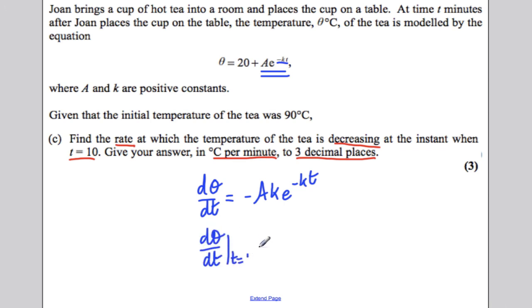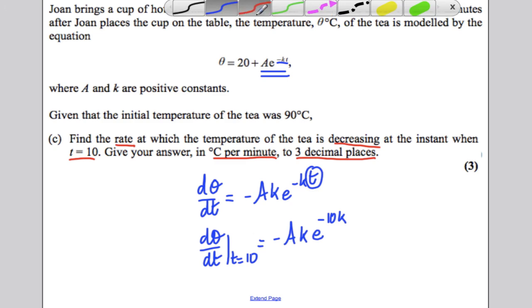Now, we want to work out d theta by dt at t is 10. So, we're going to substitute 10 into this, and we're going to get negative AKe to the negative 10K.